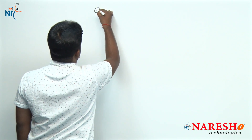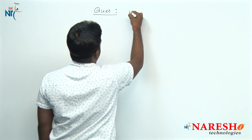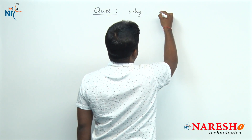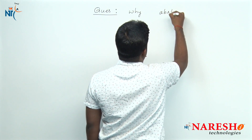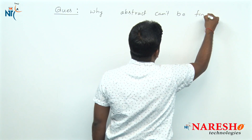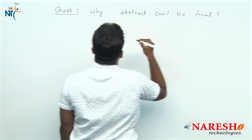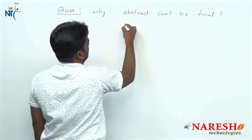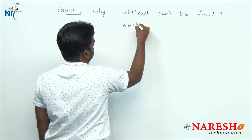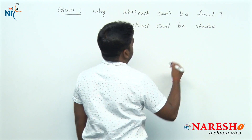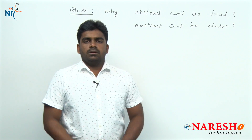The question is: why can an abstract method not be final, and why can an abstract method not be static?